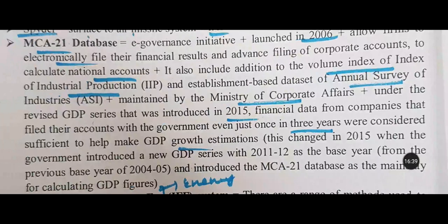MCA21 database is the Ministry of Corporate Affairs database. Using this database you can calculate GDP, including real GDP. The MCA stores all details of all companies — all their financial data. It is an e-governance initiative launched in 2006 that allows firms to electronically file their financial results and advance filing of corporate accounts to calculate national accounts.